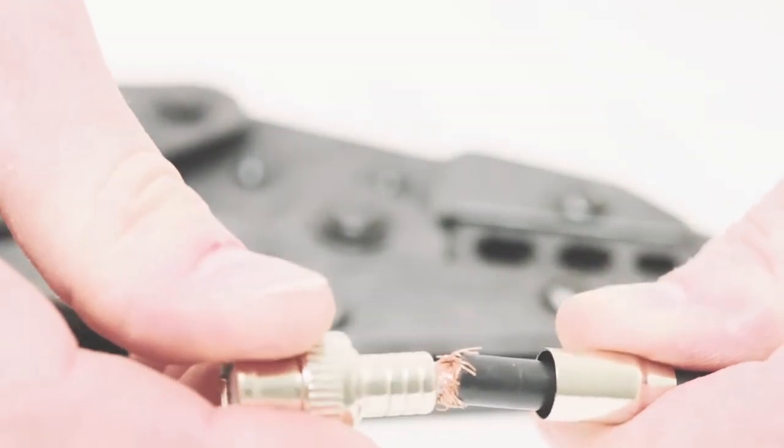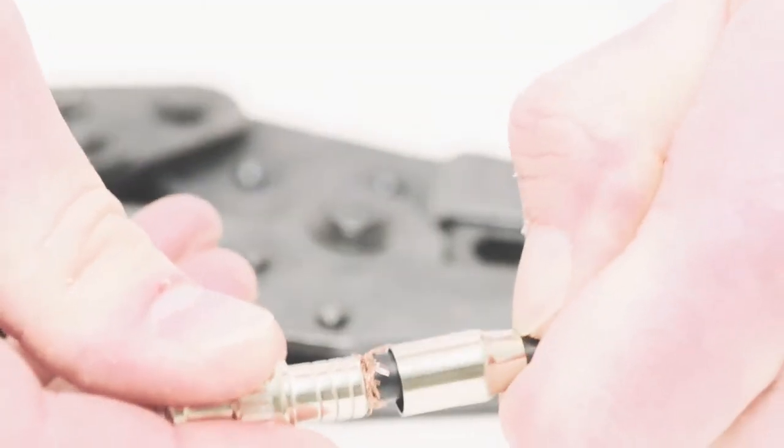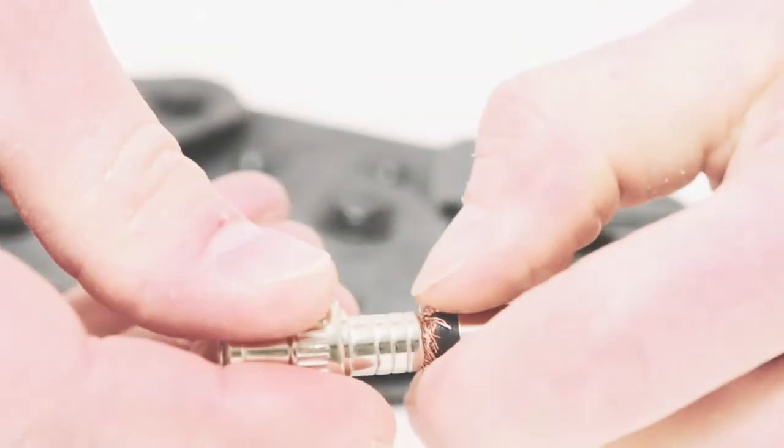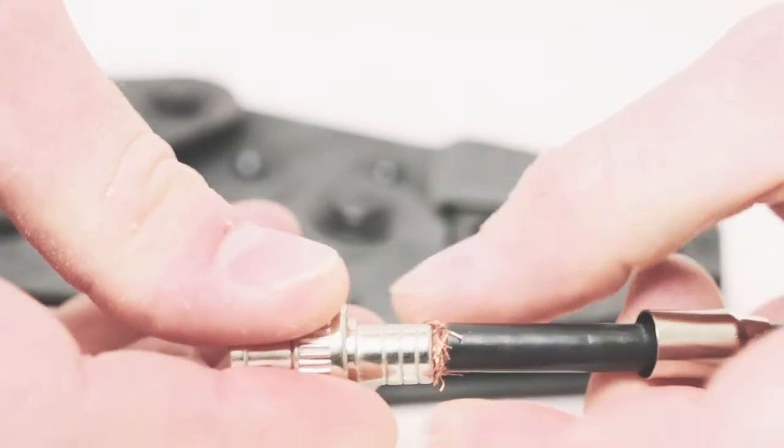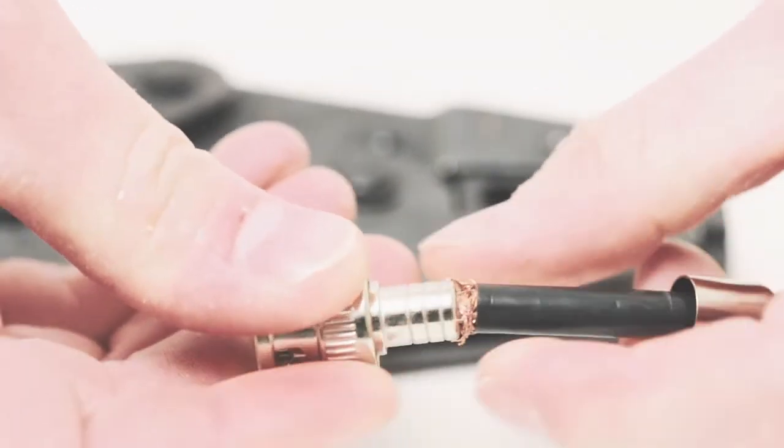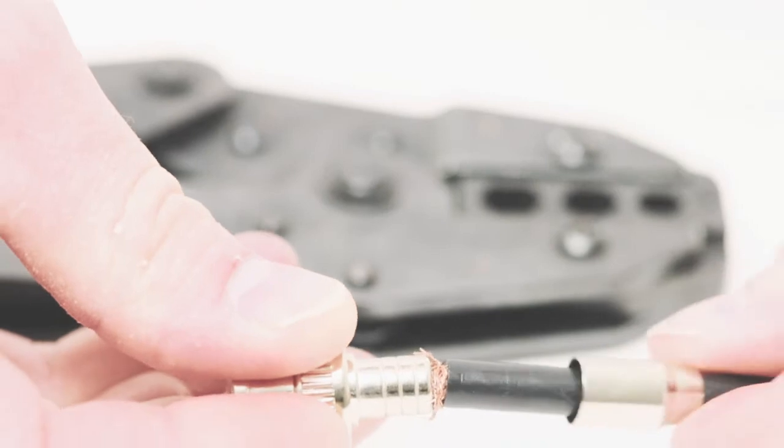Push the connector on the dielectric all the way up against the jacket. Then slide the braid on top of the connector. Slide down your ferrule and you're ready to crimp.